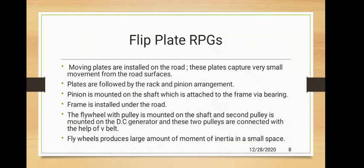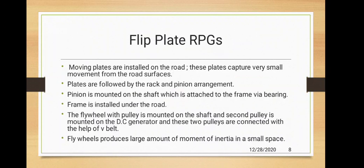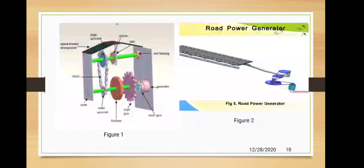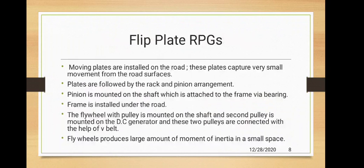Flywheels produce a large amount of rotational inertia in a small space. In the right figure, you can see a flip plate mechanism. At the lowermost level of the shaft, there is a flywheel system designed to produce large torque in very small space. This reduces the amount of gearing required to produce an equal amount of rotational inertia.